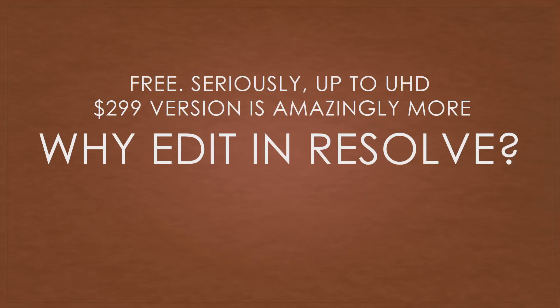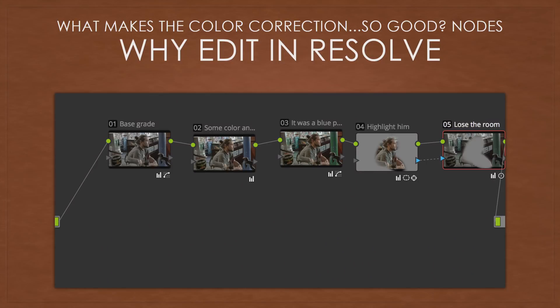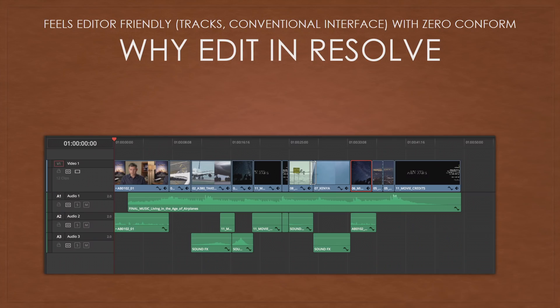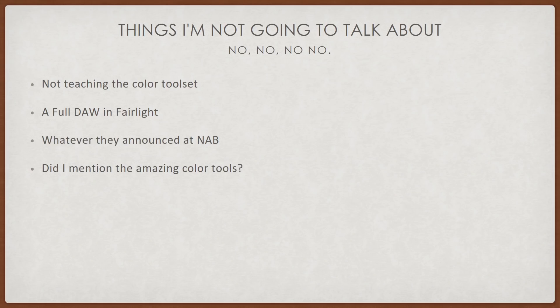The first thing I want to mention is it's really free. The $299 version does amazingly more, but I know quite a number of people who use the free version of Resolve. Why you want to edit in it is because you can take your Final Cut, your Avid, your Premiere keyboard and go. I use the Resolve keyboard, but it's this color toolset that we all live and breathe and die for — there's a zero conform. You can just switch back and forth, and now you can switch between Fairlight too. Did I mention the amazing color tools?